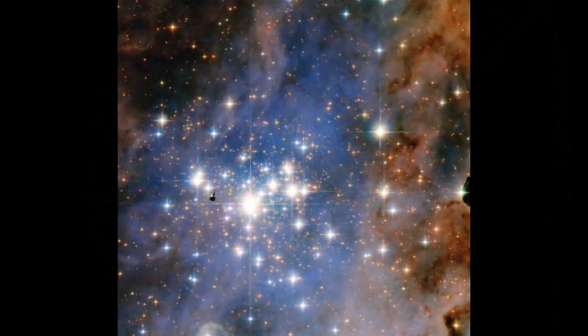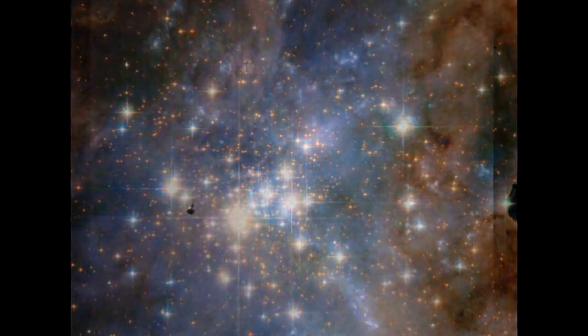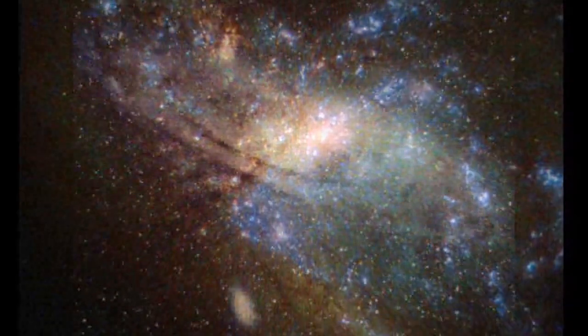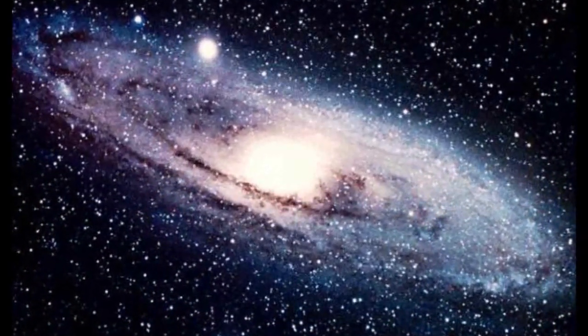The Hubble Space Telescope captured this jaw-dropping image of a star cluster known as Trumpler-14, located within the Carina Nebula. The stars of the Trumpler-14 cluster are some of the most luminous in the galaxy and abnormally hot.